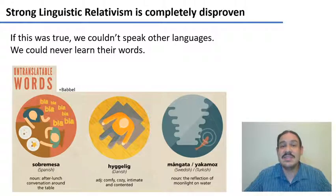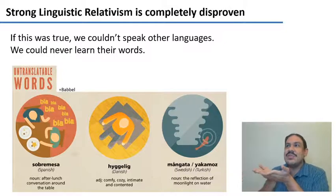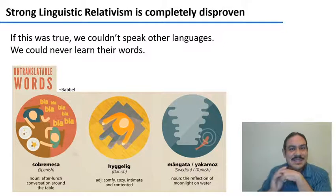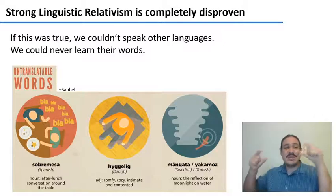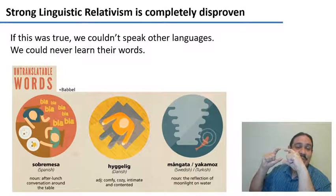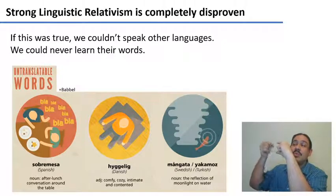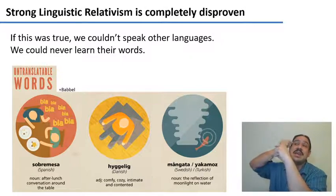There's plenty of evidence that our language does not determine the way in which we think. First of all, if this were true, there would be no way for us to learn other languages — we could never learn their concepts because we don't have those lenses. For example, if I put on my Spanish language lenses and go to Denmark and try to understand the word hygge, which means comfy or cozy, whatever ends up in my brain would be an incomplete version filtered through Spanish.